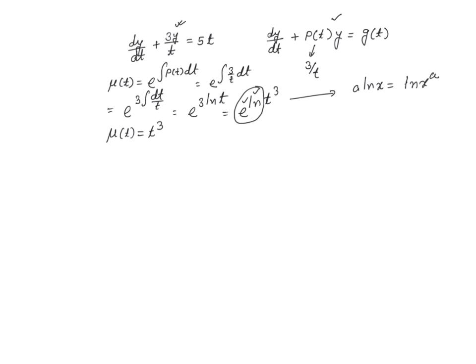Now I am going to take this μ(t) and multiply both sides of this equation by μ(t), which is t cubed. If I do that, I get t³ dy/dt plus t³ times 3y over t equals 5t times t³, which is t to the power 4.